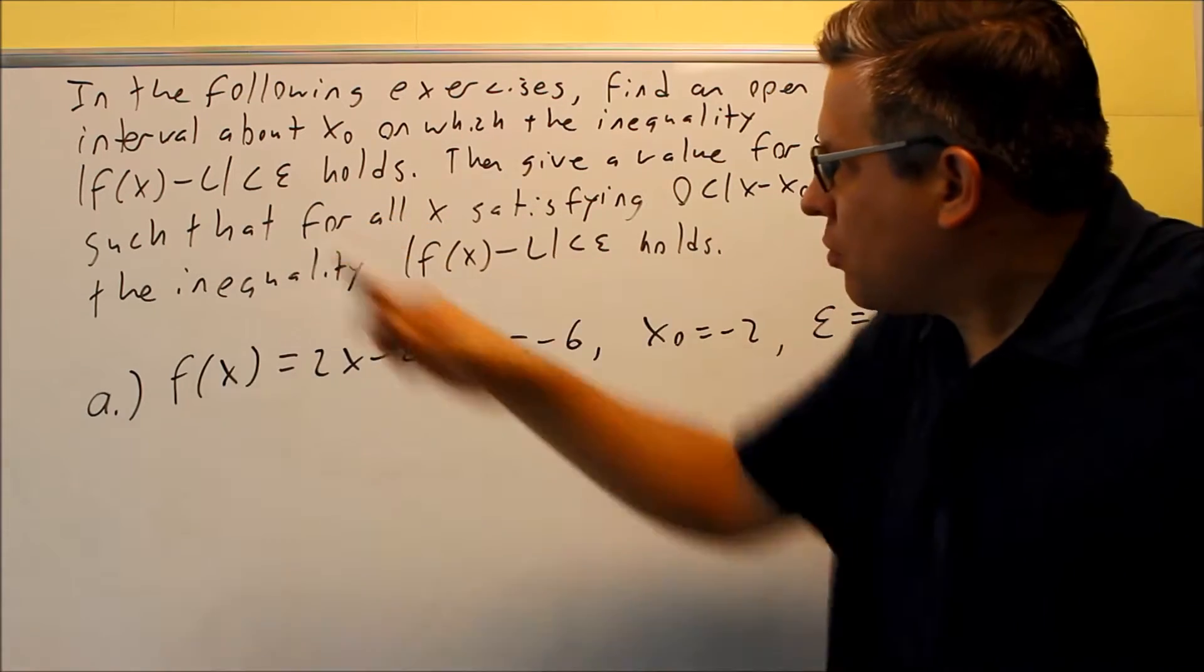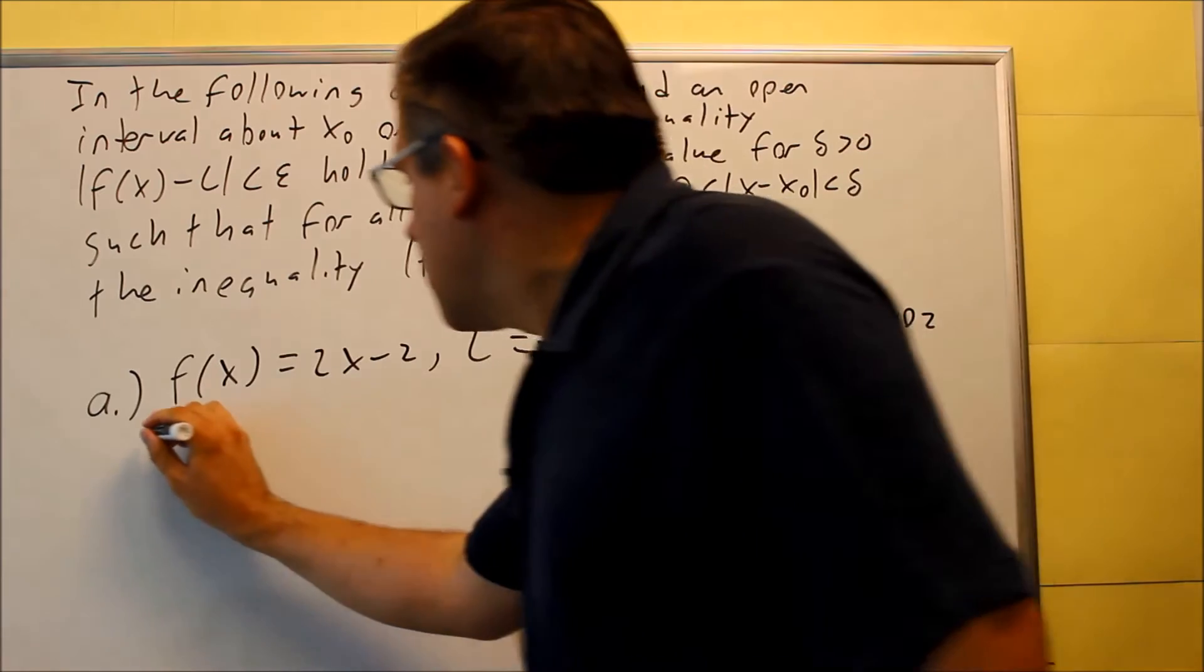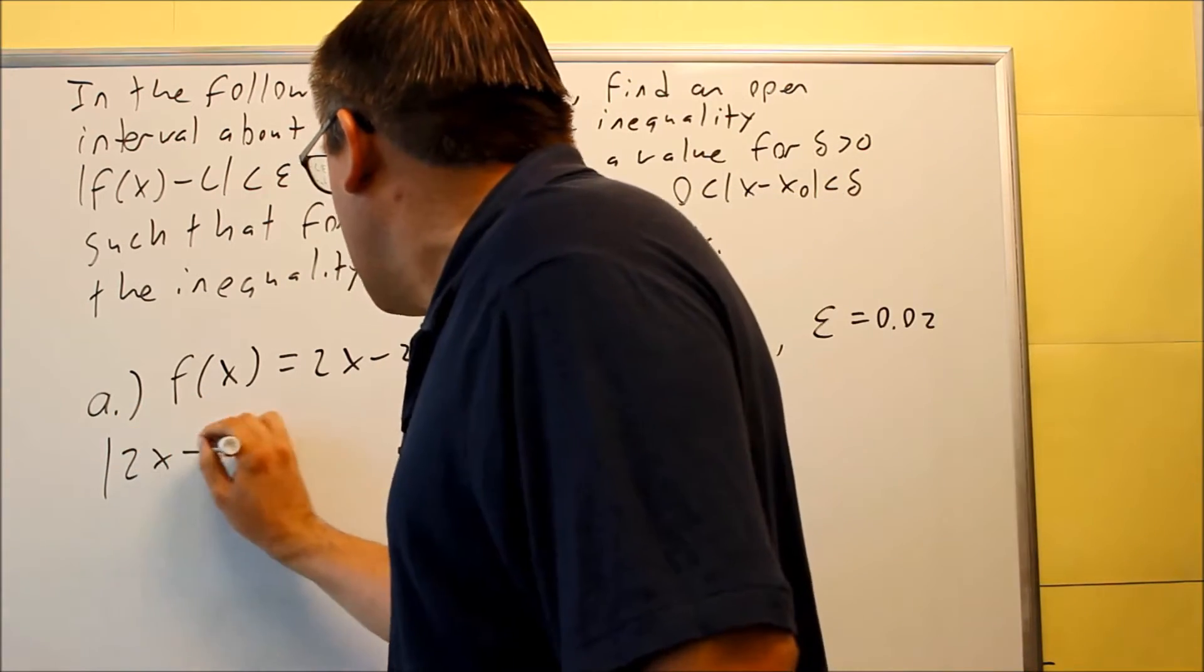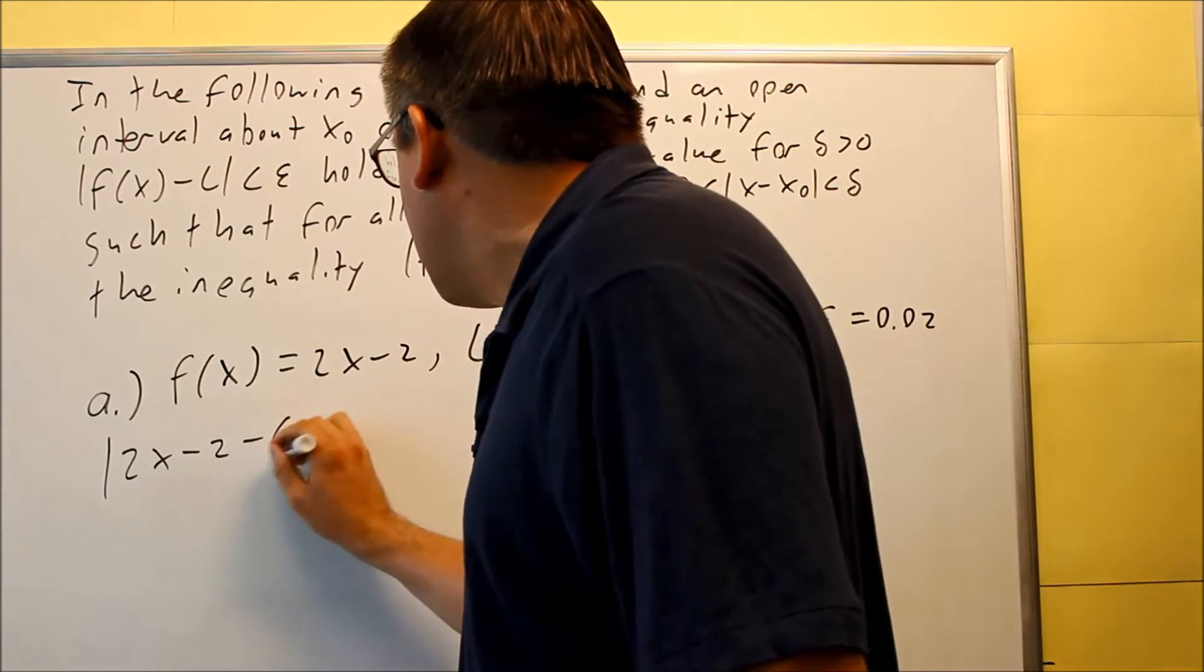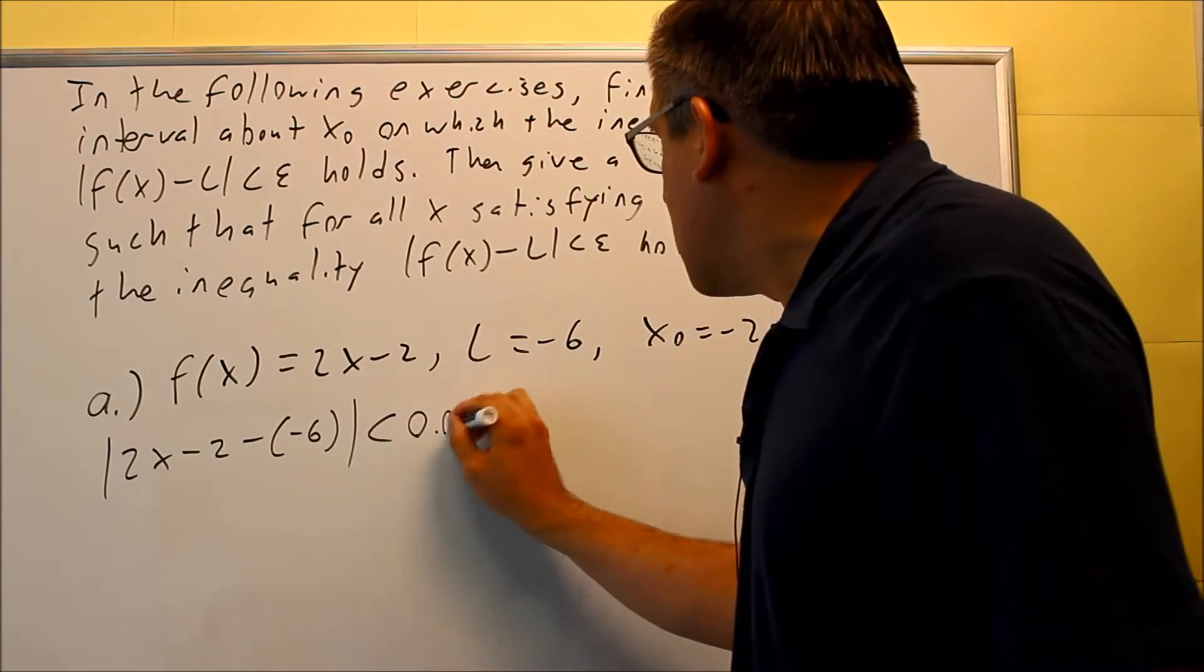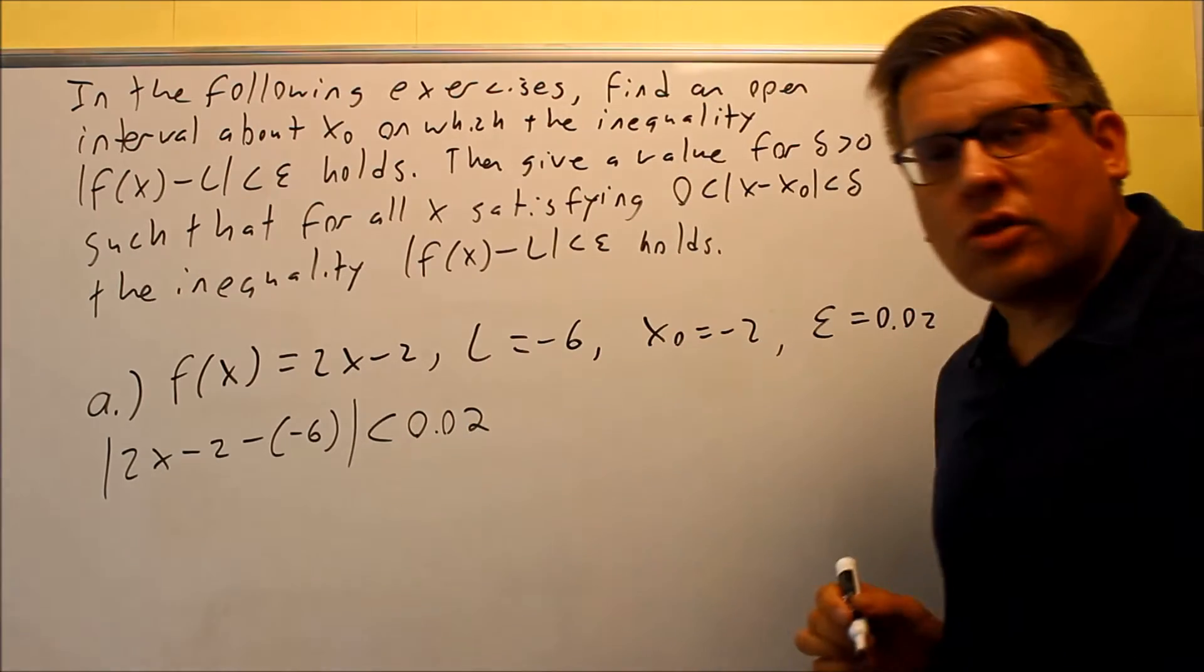and we want to plug in the information that's been provided with this particular problem. So we have everything that we need in order to plug in. So I have absolute value f of x minus L, so that's 2x minus 2, and then minus the L, minus negative 6, and then that's going to be less than epsilon, which is given as 0.02.